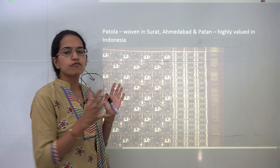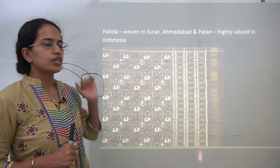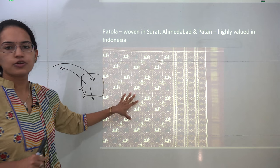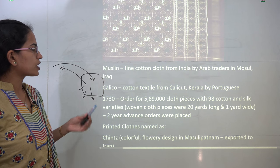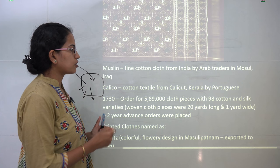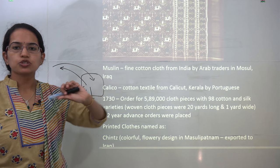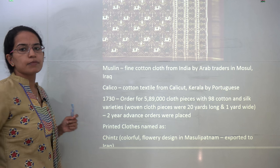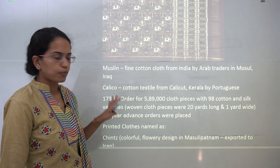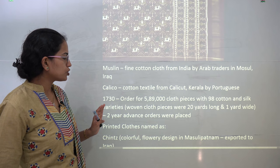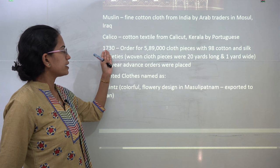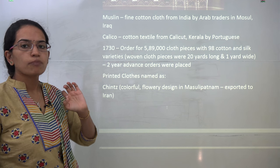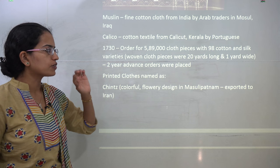Some of the notable cotton textiles were: Patola, woven in Surat, Ahmedabad and the Patan region of Gujarat, which was highly valued in Indonesia. Muslin, or mal-mal, was a very fine cotton cloth from India mainly used by Arab traders in Iraq. Calico was a cotton textile from Calicut in Kerala, valued by the Portuguese. In 1730, a huge order was placed for nearly 6 lakh pieces of cloth from nearly 98 cotton and silk varieties woven in India.